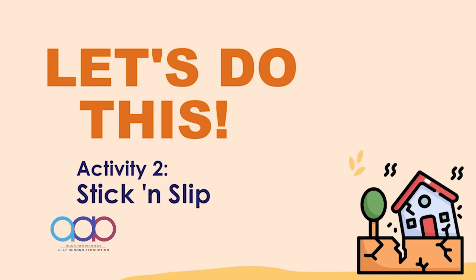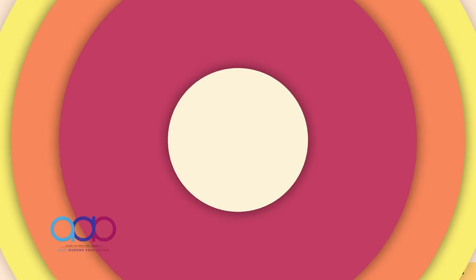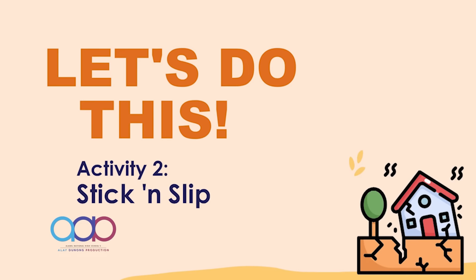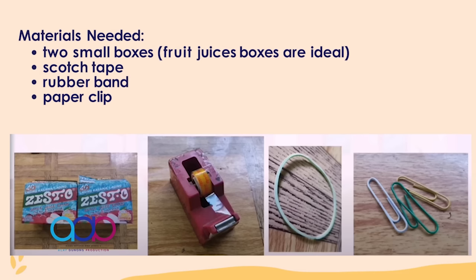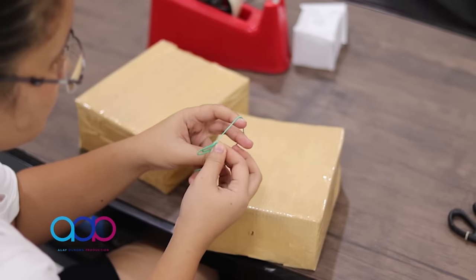How do faults produce quakes? Now that you have an idea of how a fault looks like, let us learn how earthquakes occur along faults. Let us do another activity: Stick and Slip. This will show us how earthquakes are related to faults. In this activity, two small boxes are needed — cartons of fruit juices work perfectly — along with scotch tape or masking tape, a rubber band, and a paper clip. You can also try this at home.